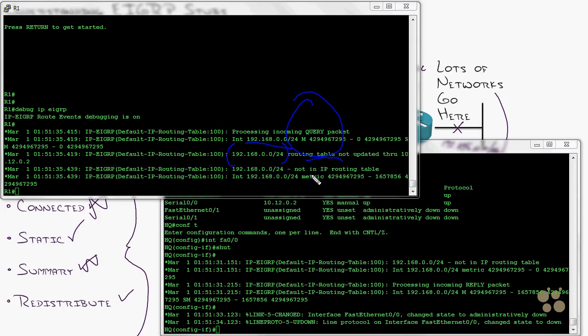So essentially router one's receiving a query for that 192.168.0.0. It's going, wait a second. Nope. Nope. Nope. I don't have that. It's not in my routing table. And over on this side, I have a debug turned on and it says, okay, I'm processing the reply. So small network happened pretty quick, right? We've got the query. It says, I don't have that route reply comes back. Okay.